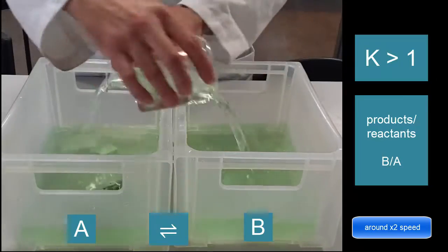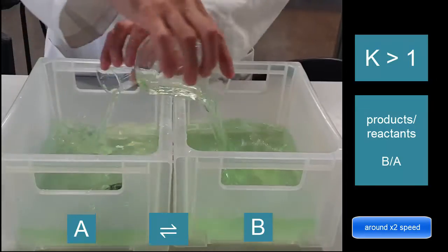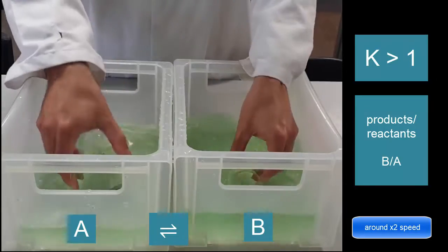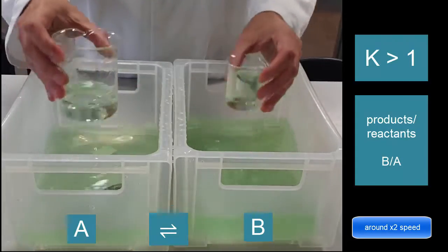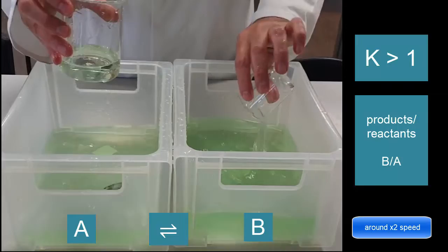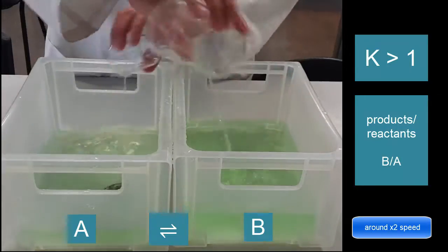So K is greater than 1, which means most of it goes to the product side because the products are larger than the reactants. So you'll see B gets about two-thirds and A gets about one-third, and I just keep doing it forever, and the amount from A to B and B to A is the same in both sides of the beaker.